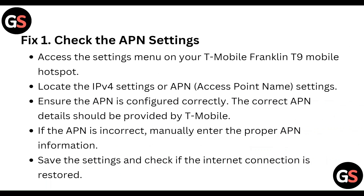Access the settings menu on your T-Mobile Franklin T9 Mobile Hotspot. Locate the IPv4 settings or APN settings. Ensure the APN is configured correctly.